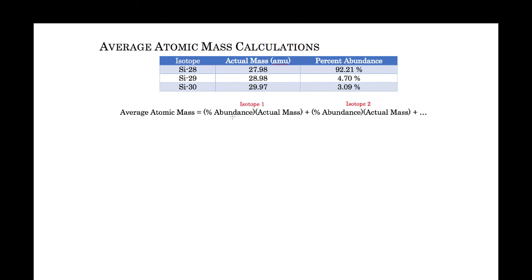This is the general calculation: percent abundance times actual mass plus percent abundance times actual mass, and we continue that process depending on how many isotopes we have. In this one I have three isotopes, so I'm going to carry it out three ways.